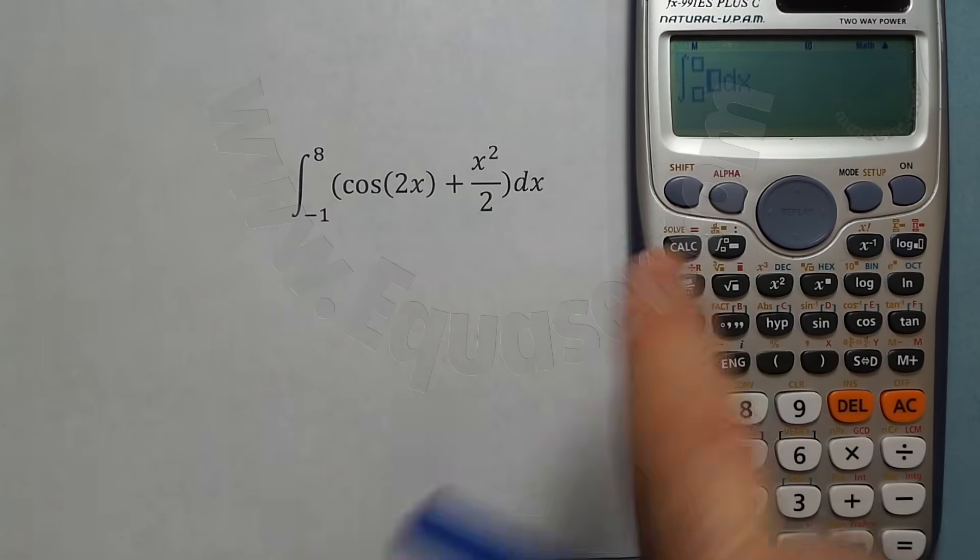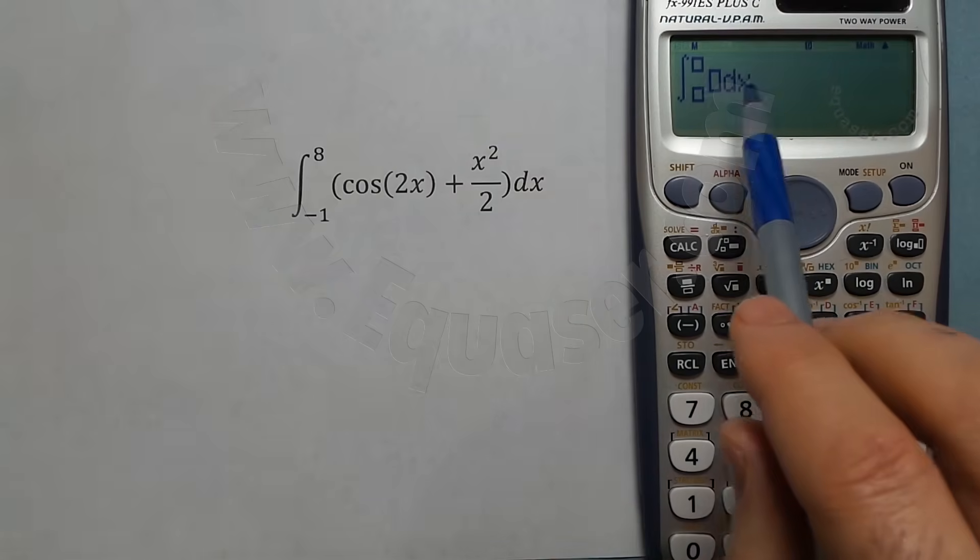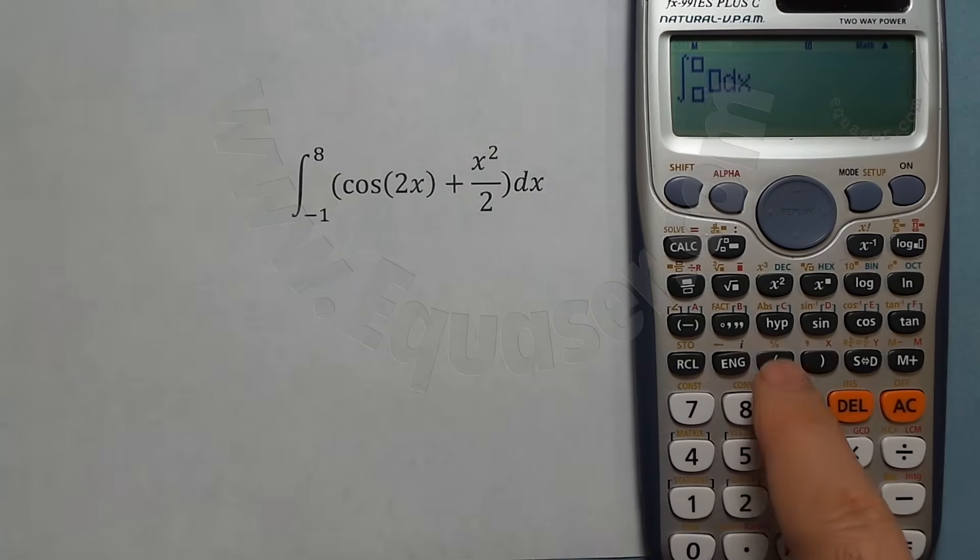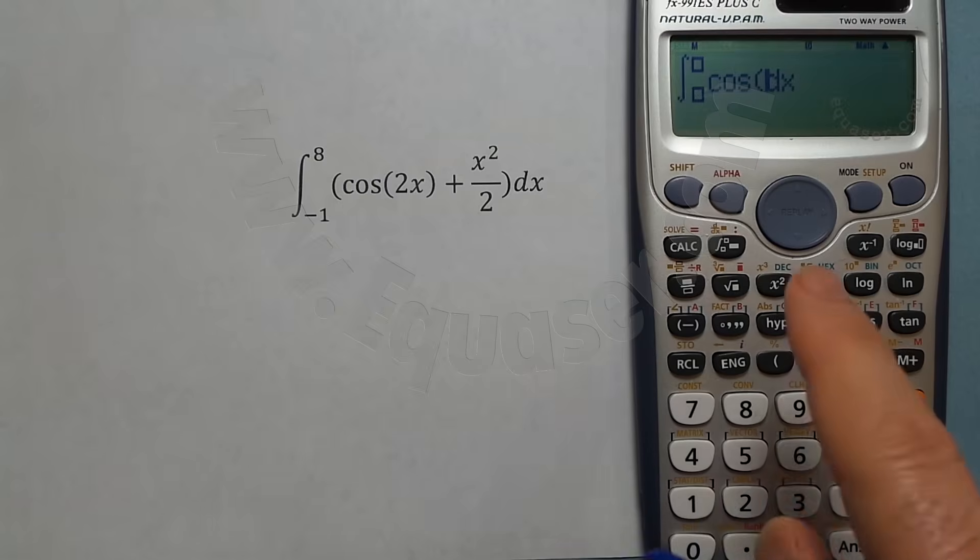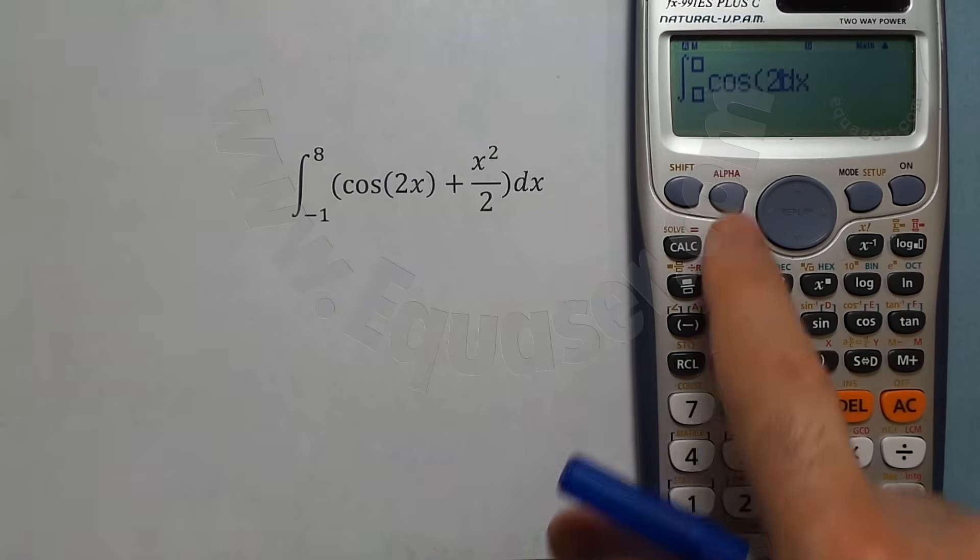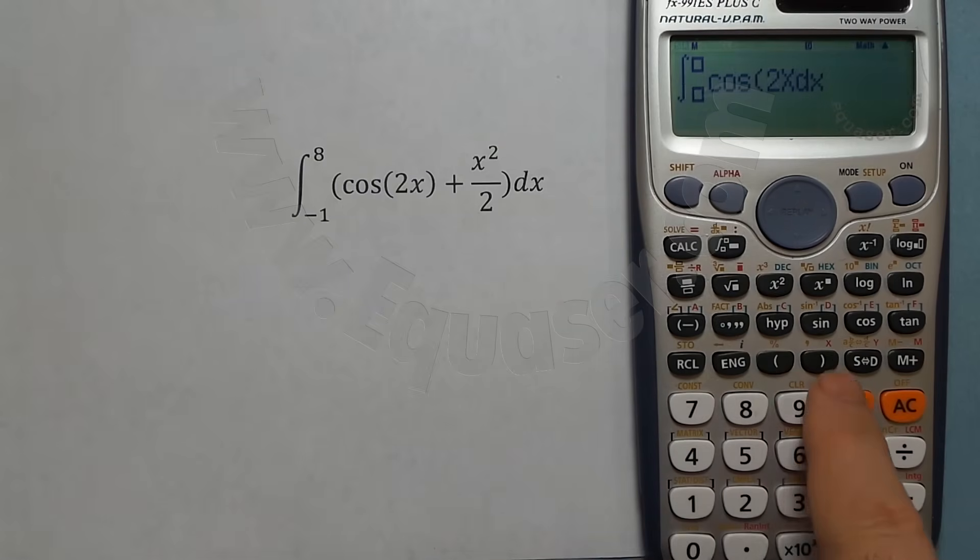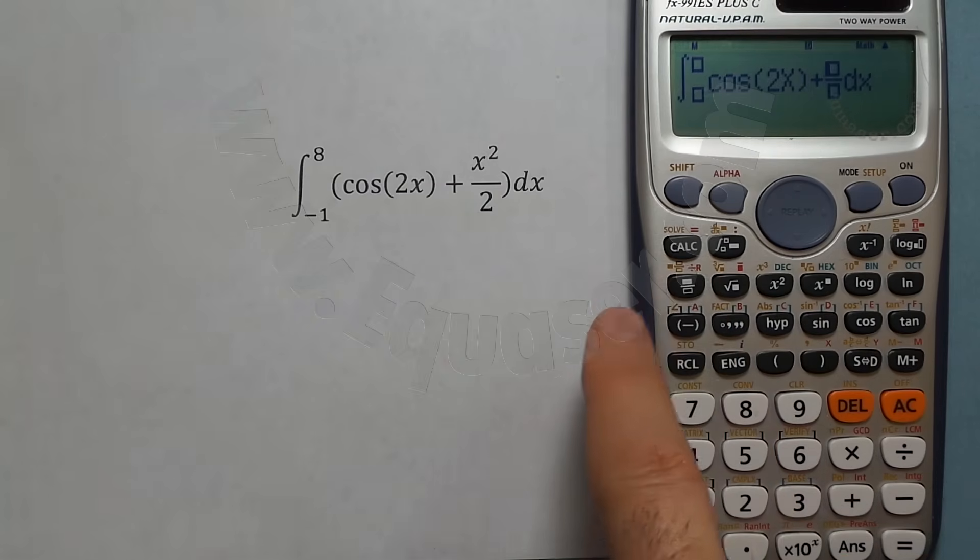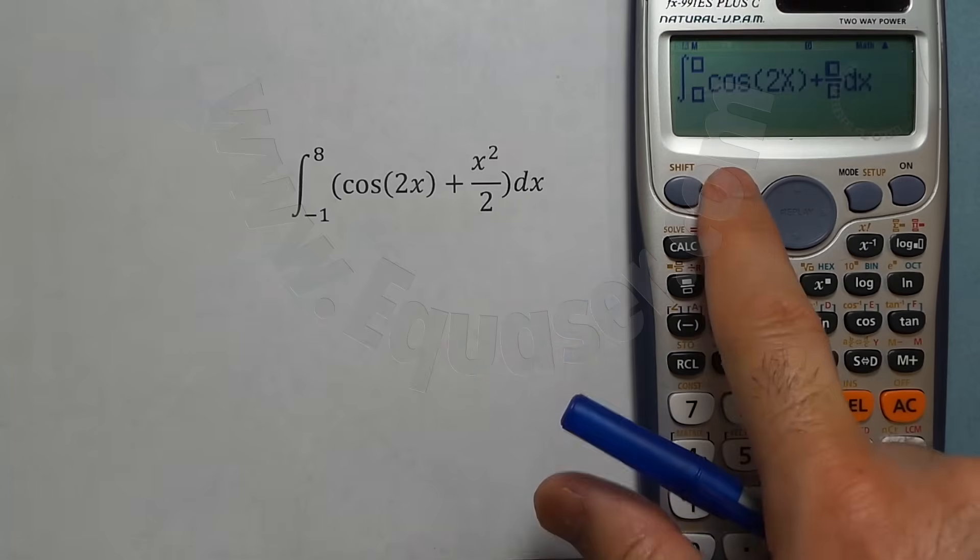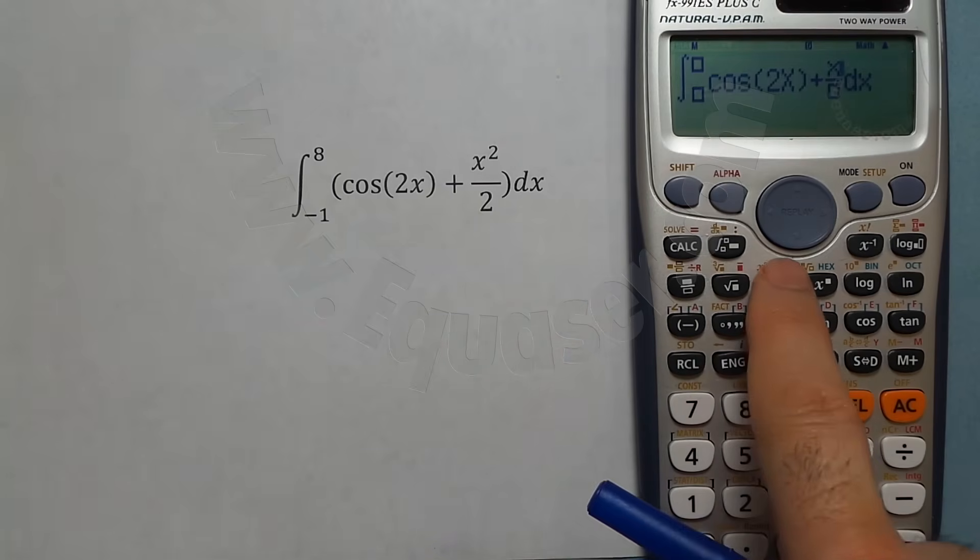So it can be accessed directly with this button. Now the cursor is already for the function area. So I press cosine, two and then alpha x, close the parenthesis, plus and then fraction, x squared, alpha and then x squared.